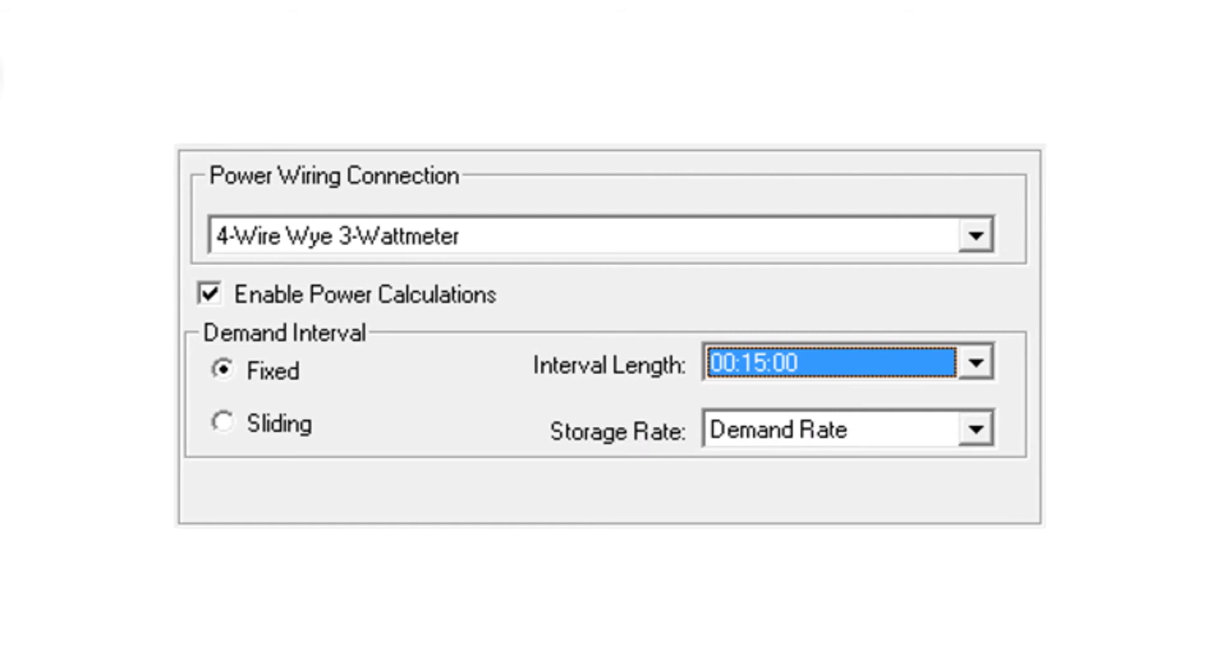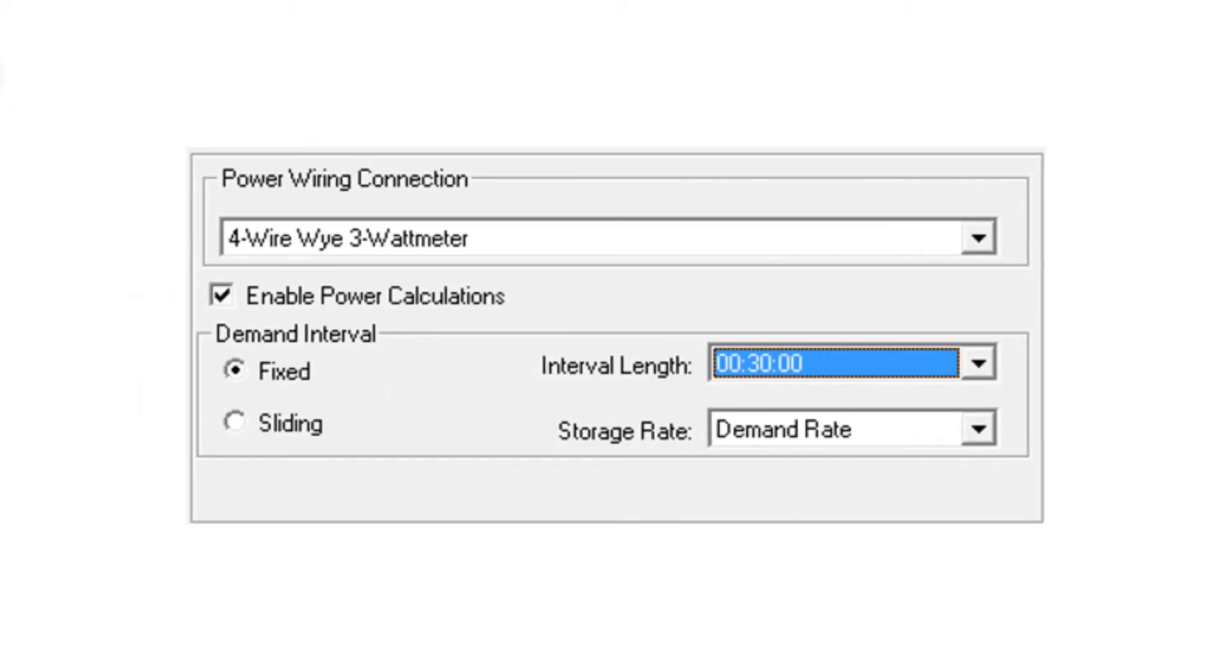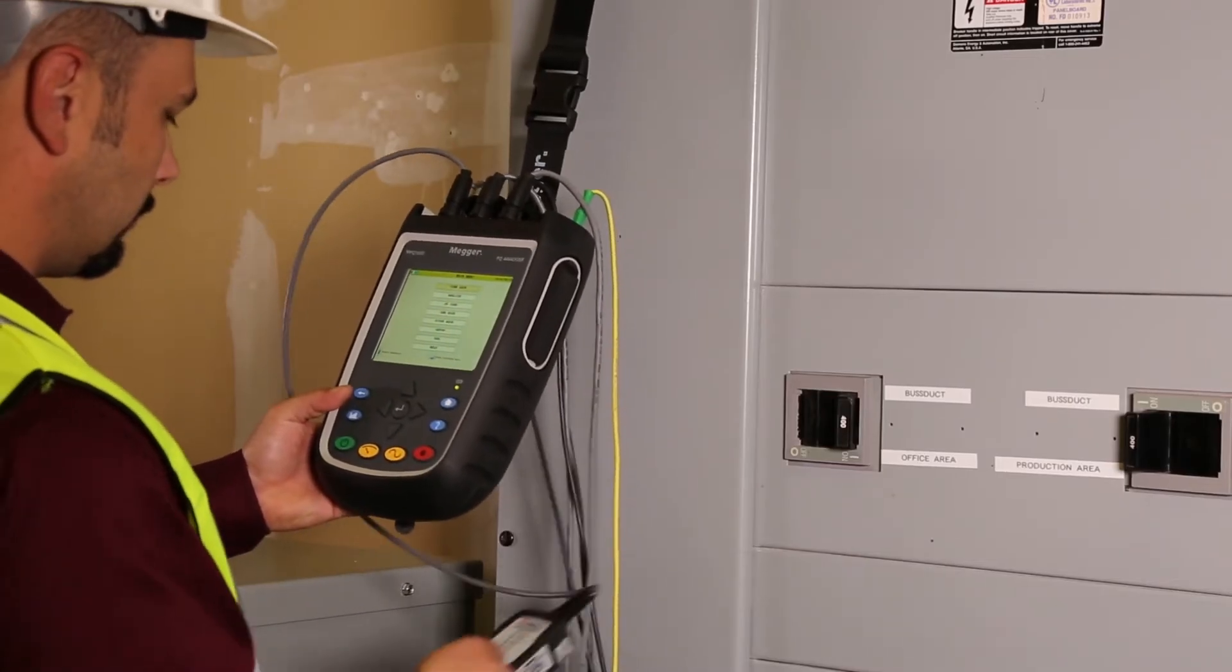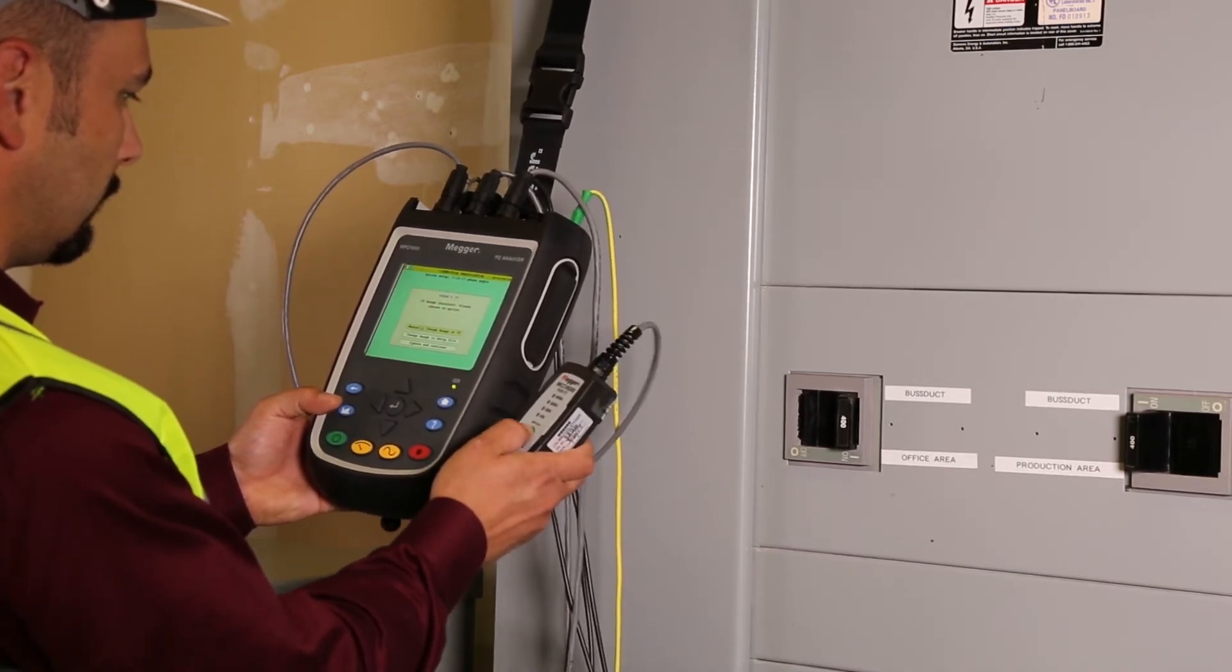This interval can be based on a 15-minute fixed interval, but not always. For example, the interval can be 30 minutes, or they can be fixed or sliding intervals. Most meters don't allow you the flexibility to match your revenue meter's aggregation rate. MPQ does allow this. Without this, you don't get the proper answer and cannot perform an adequate energy audit.